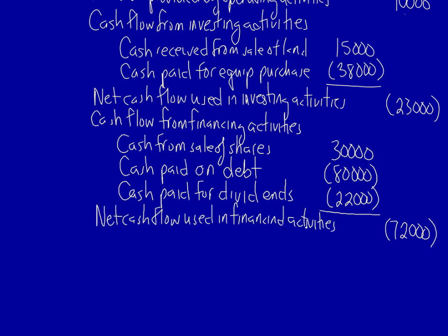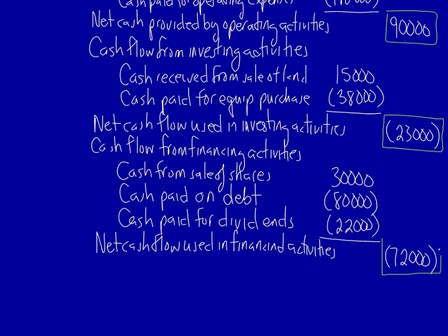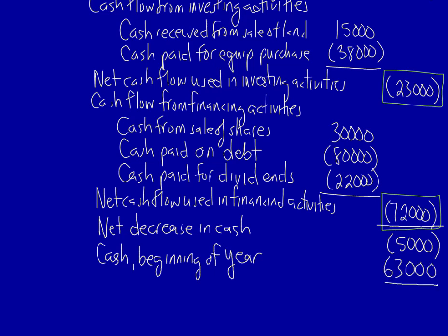At the bottom of the statement of cash flows, we first total the three amounts. $90,000 minus $23,000 minus $72,000 tells us if there's been a net increase or decrease in cash. Here we have a net decrease in cash of $5,000. Next, cash at the beginning of the year, which we know was $63,000. Finally, cash at the end of the year: $58,000.